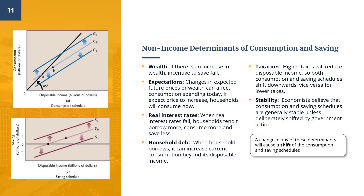There are many non-income determinants that affect how much households will consume or save. A change in any of these determinants will cause a shift of the consumption and/or saving schedules either upwards or downwards. These determinants are: wealth, expectations, interest rates, borrowing, taxation, and stability. Let's look at wealth first.